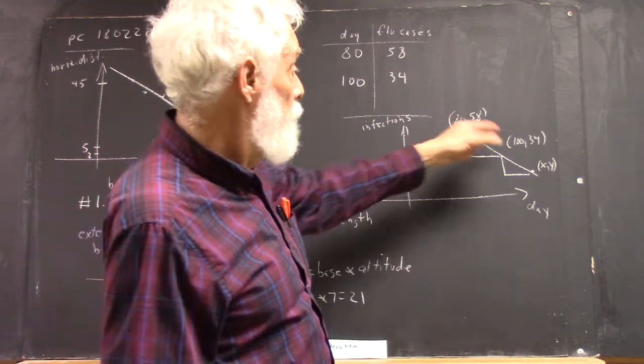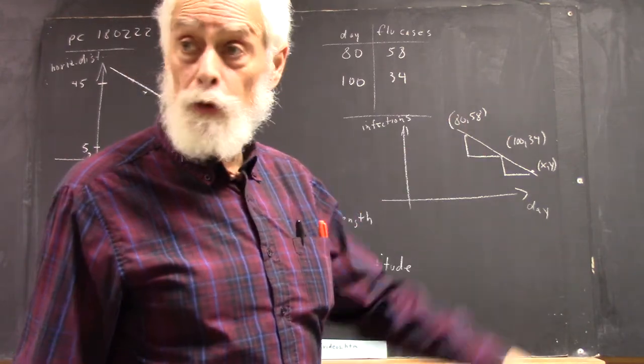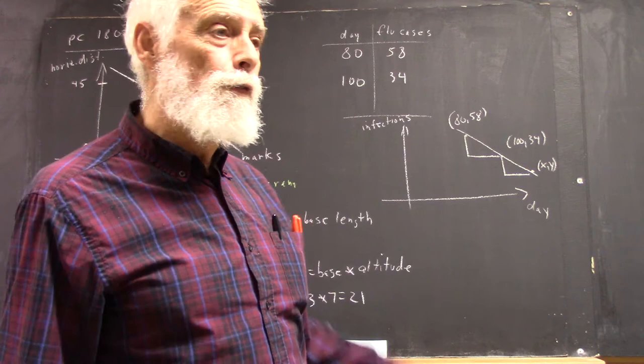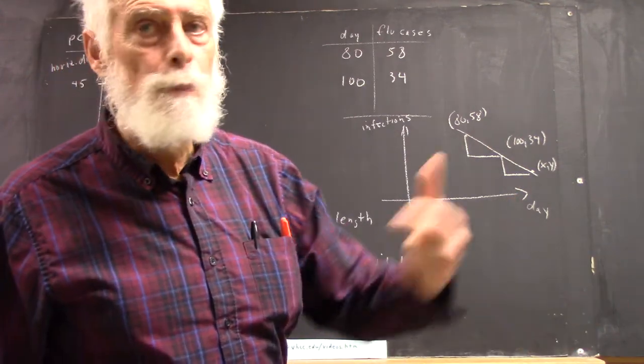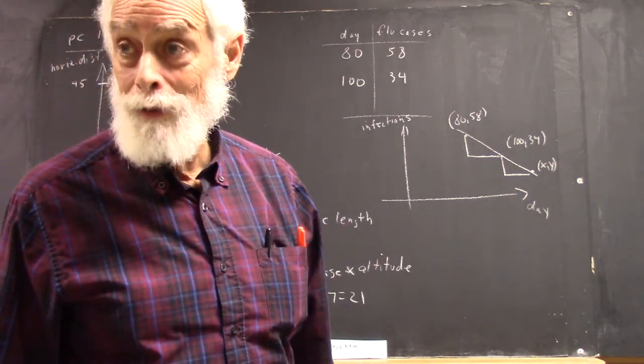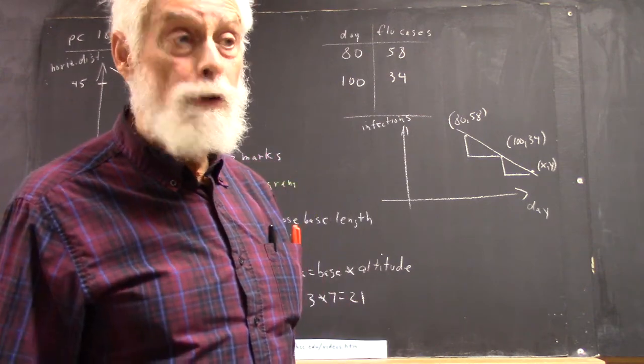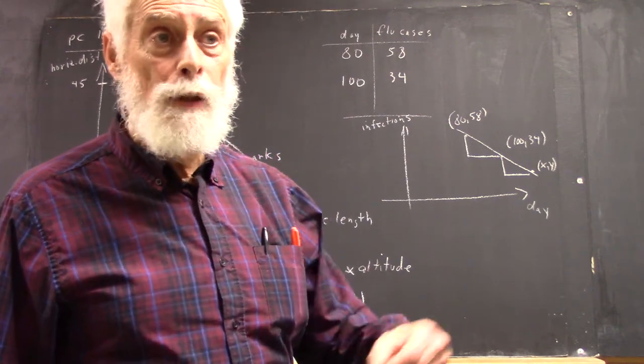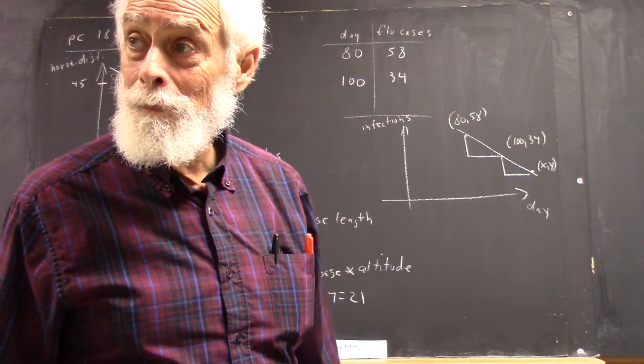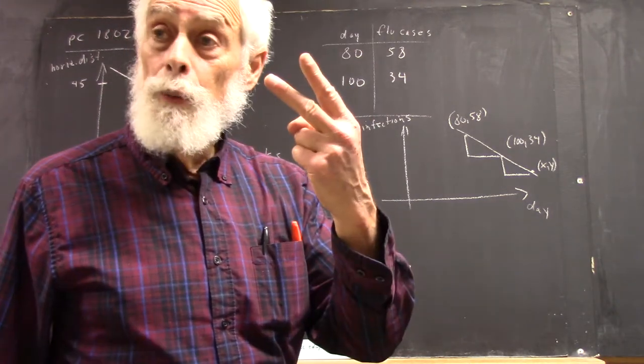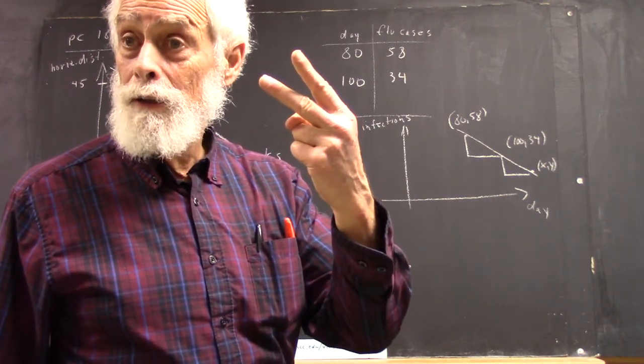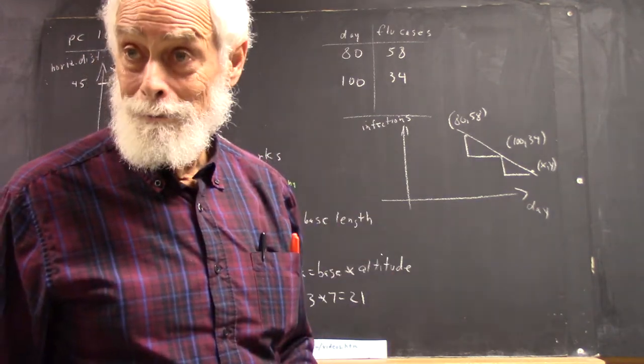As I said, you can plug these numbers into a two-point form for the equation. You can find the slope and then plug it into the point-slope form if you want. You have all kinds of options. You can use y equals mx plus b and get two equations for m and b, just like we did for a quadratic model.